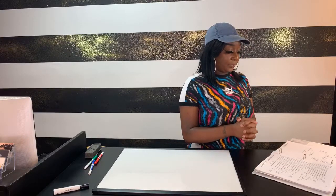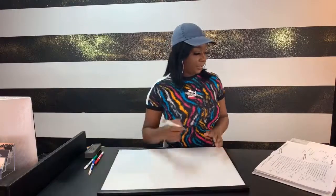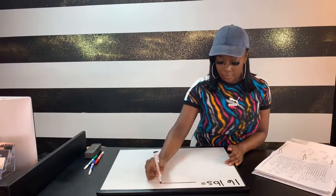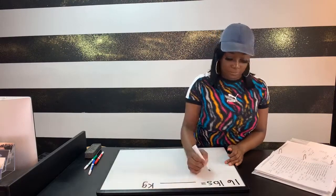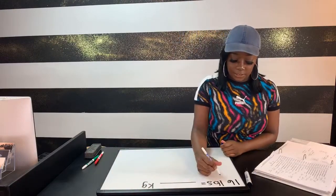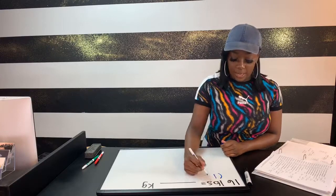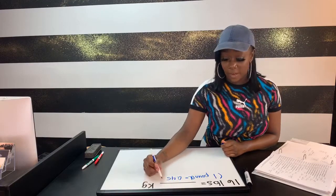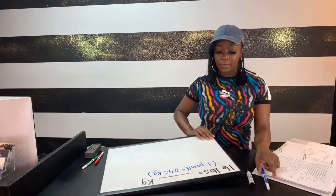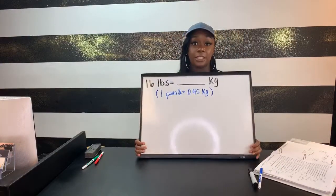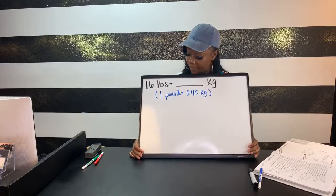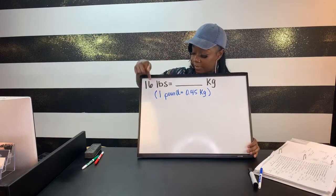Let's try another one. The question says 16 pounds is how many kilograms, and the key says one pound is equal to 0.45 kilograms. This is our practice question — I'm doing two additional practice questions just to clarify how it works every single time. First things first: anytime I have a conversion, I always start with whatever they want me to change, written on my left-hand side.